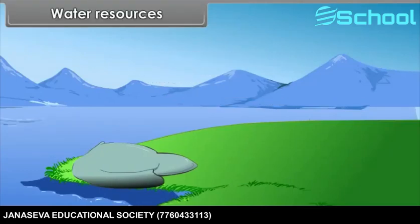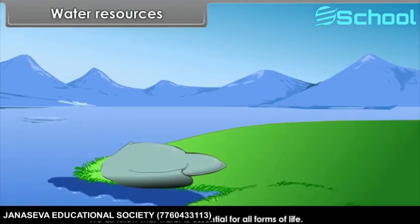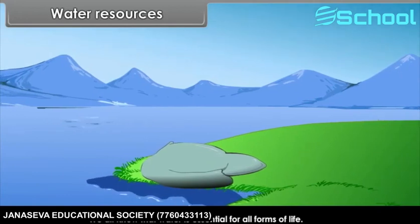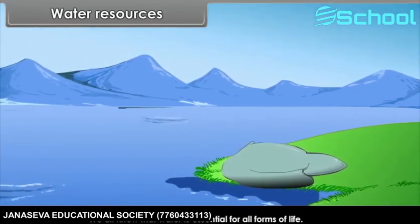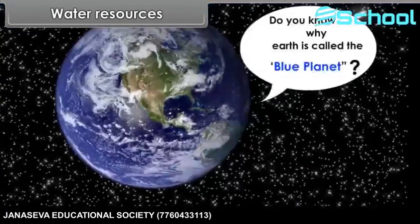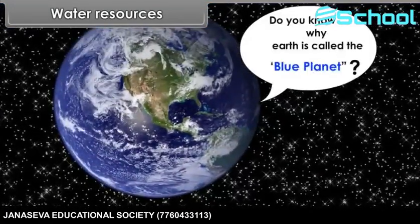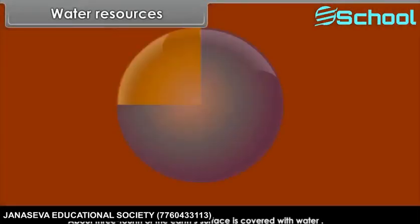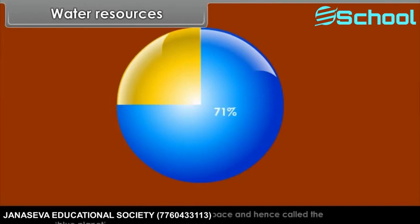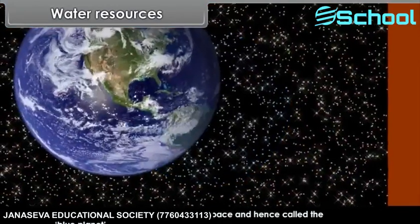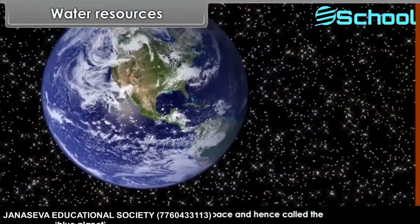Water Resources. We all know that water is essential for all forms of life. Do you know why Earth is called the blue planet? About three-fourths, or 71%, of the Earth's surface is covered with water. As such, the Earth appears blue from space and is hence called the blue planet.